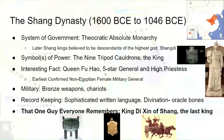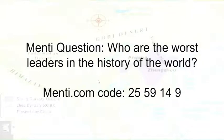The one guy that everybody remembers from this dynasty is someone known as King Di Xin, and he is the last king of the Shang dynasty. Here's our question: who are the worst leaders in the history of the world? Think about this and ponder it. The Mentimeter code will probably expire by the time you watch this presentation, but think of it regardless.